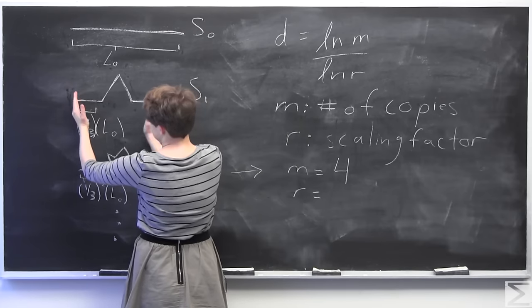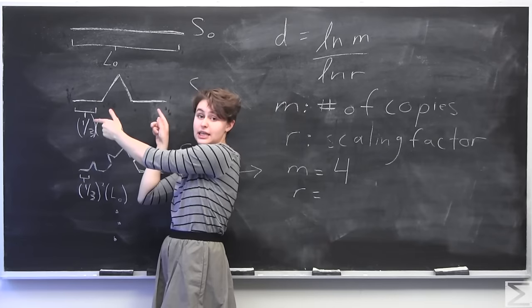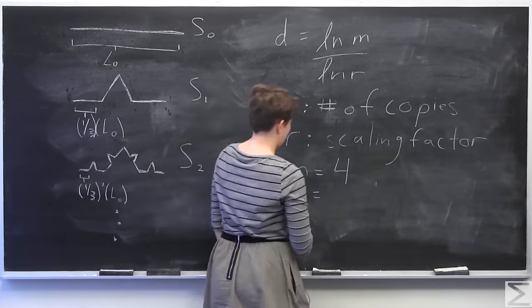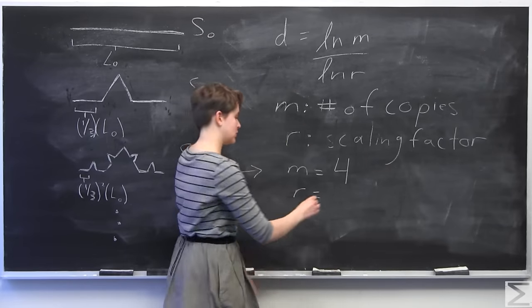And as you can see here, this is scaled down. It's a little bit more difficult to see here. But we scale this by a factor of three as well to get here. So we have overall, our scaling factor, r, is going to be equal to three.